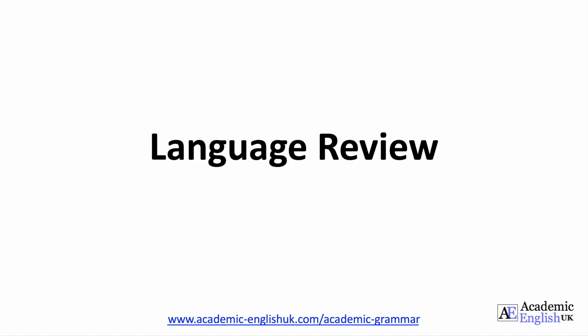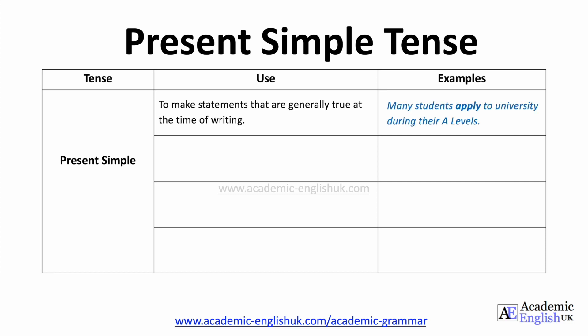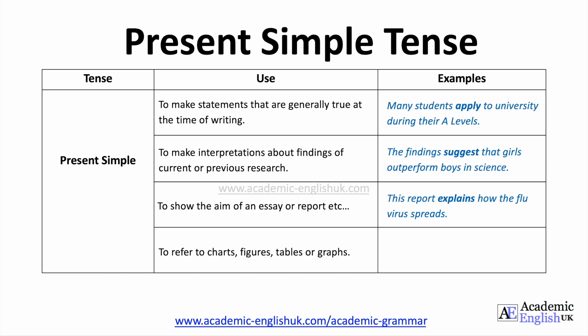We'll begin with a language review of these tenses, looking at the use and examples. Starting with the present simple, which has four key uses: to make statements that are generally true at the time of writing, to make interpretations about findings of current or previous research, to show the aim of an essay or report, and to refer to charts, figures, tables, or graphs.